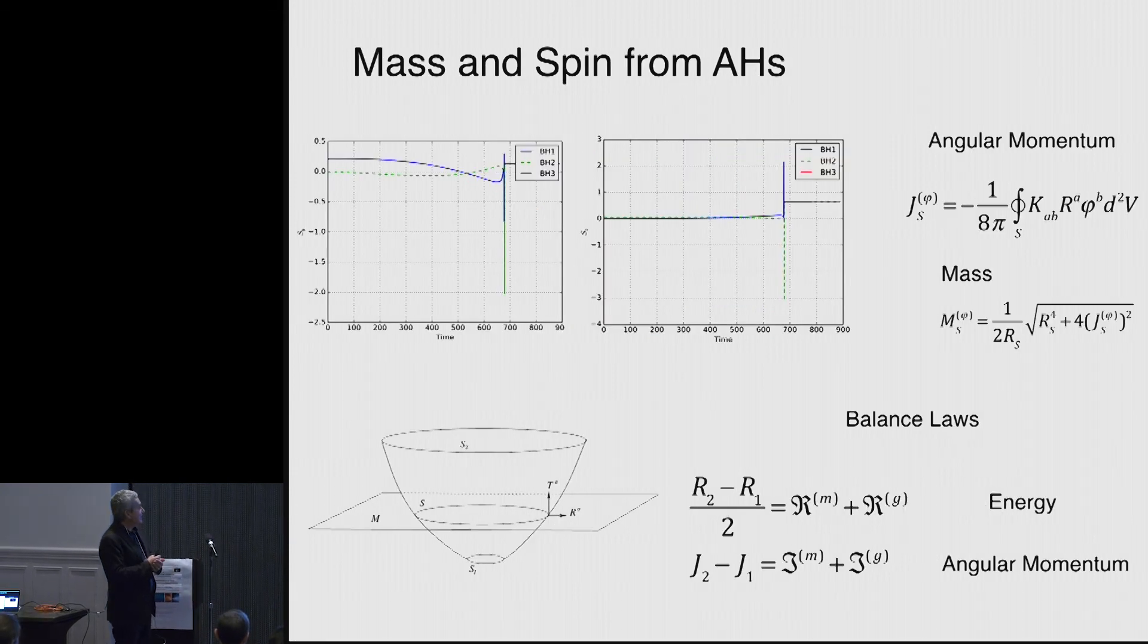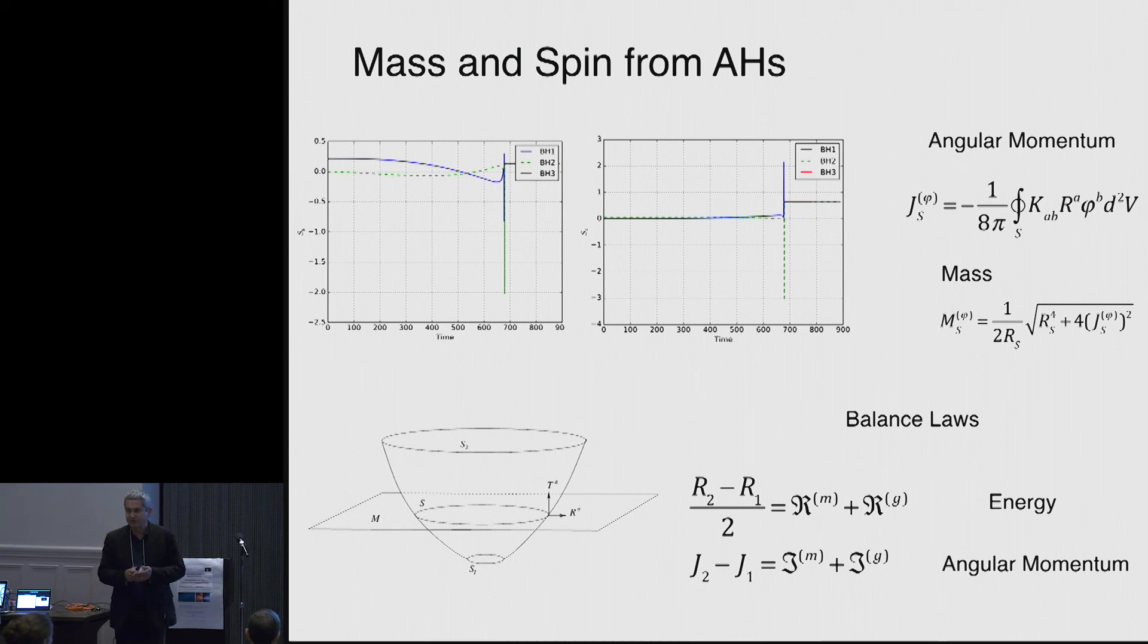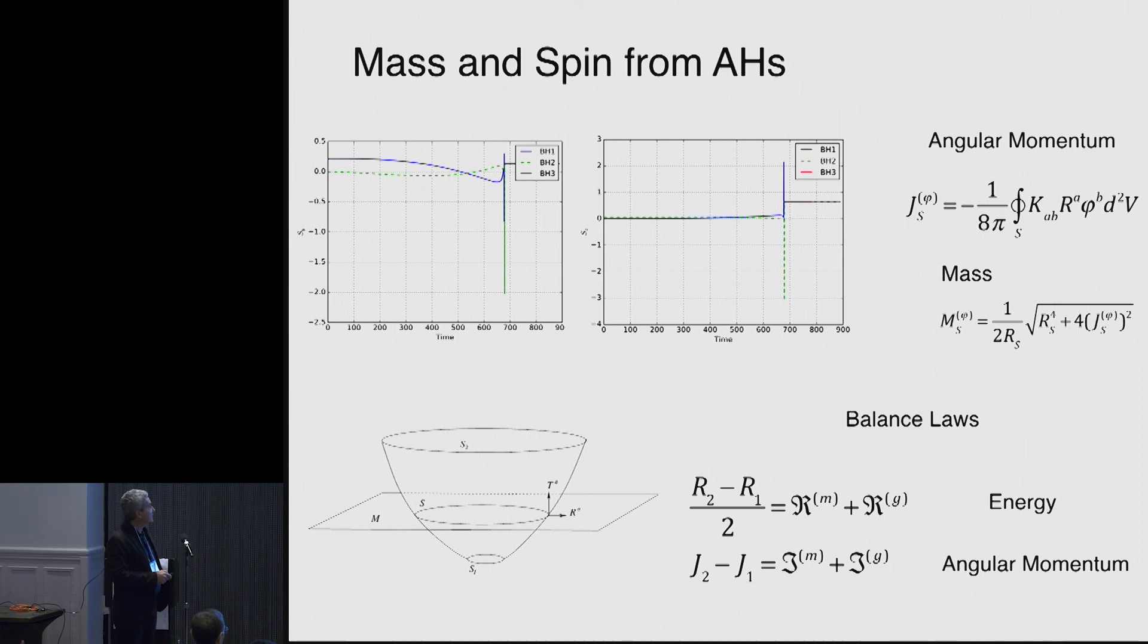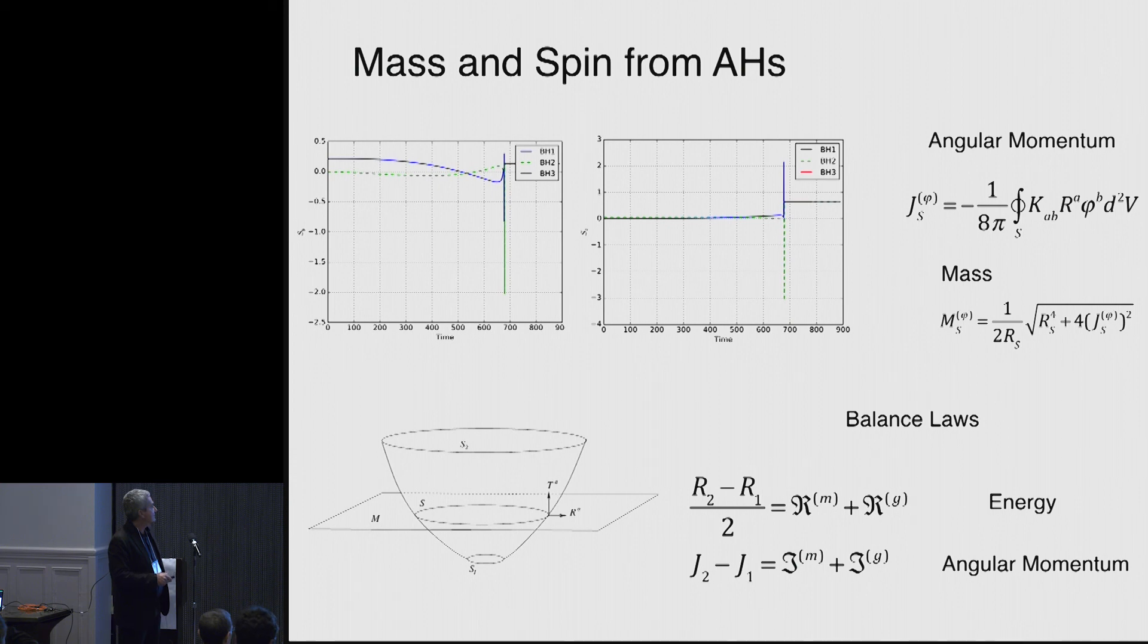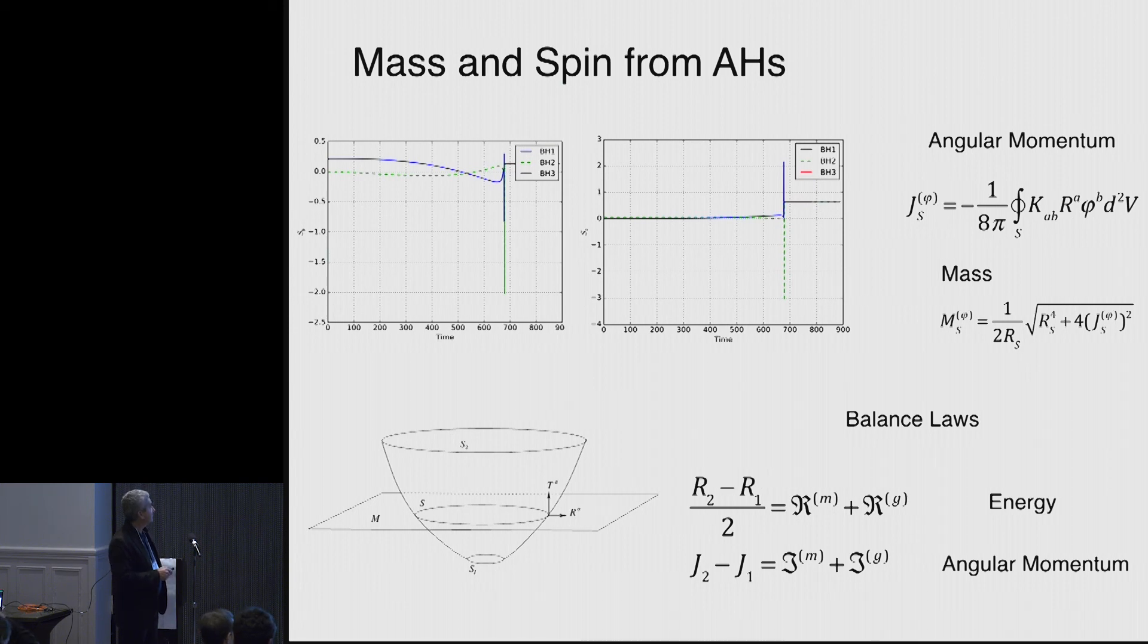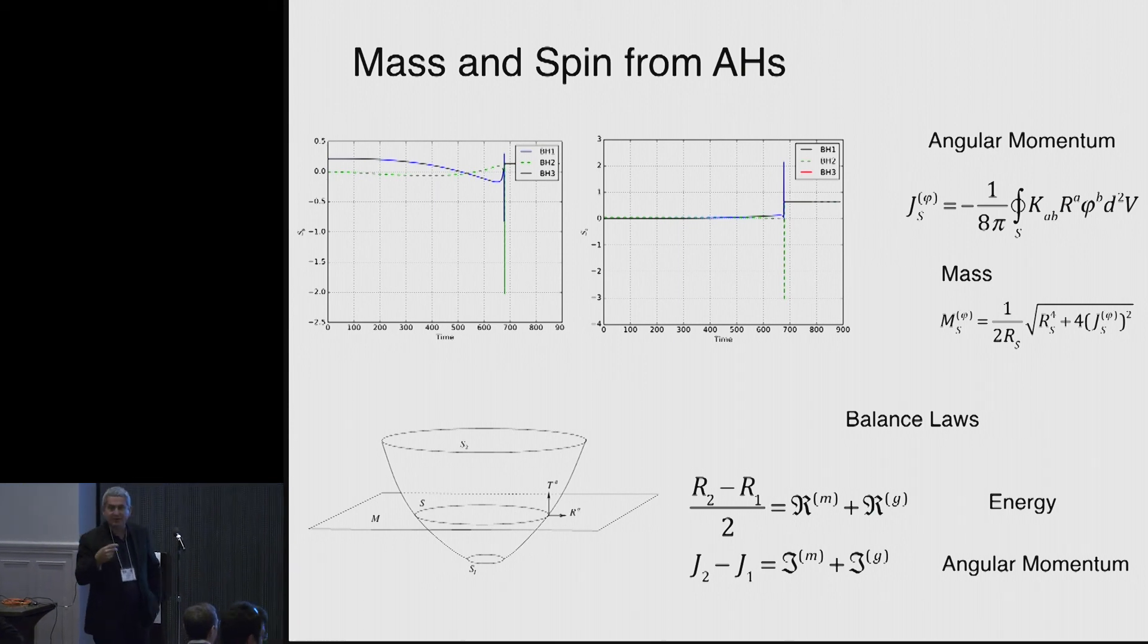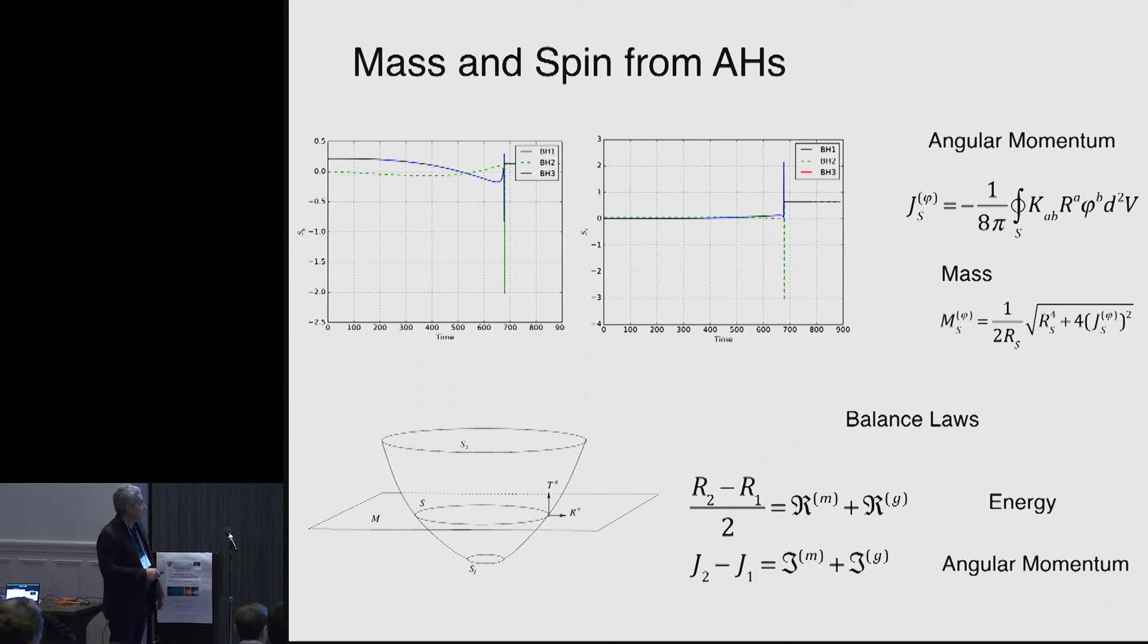It has been very useful for numerical simulations to use the apparent horizons because there are formulas and one can compute the angular momentum, that is the spin of the black holes. You can compute the mass. Once you have the spin and the areal radius of the horizon, you can compute the masses. And just here are two examples of an evolution of two black holes in which you can actually track the spins of the black holes as they merge, as they evolve, and you can track their masses. And there are balance laws associated with that as well.